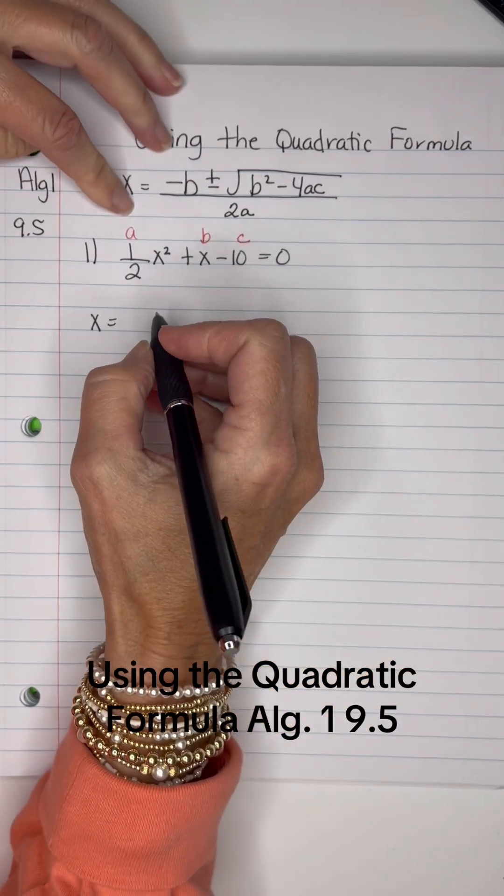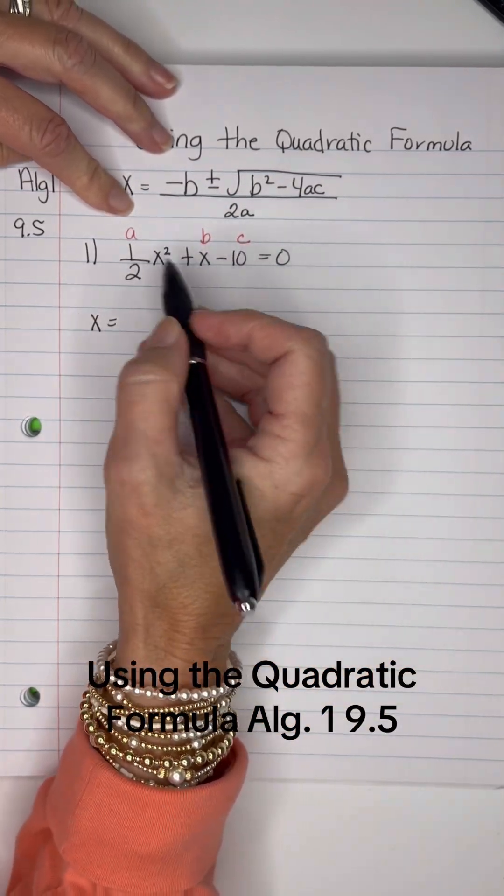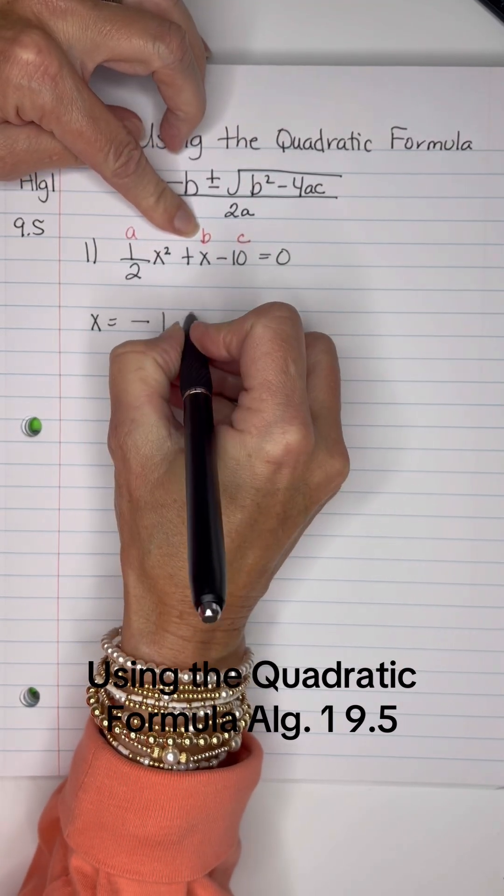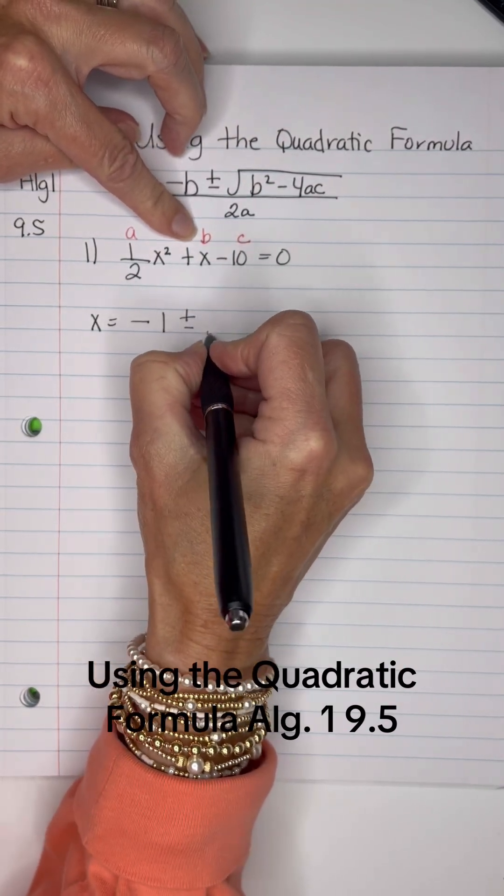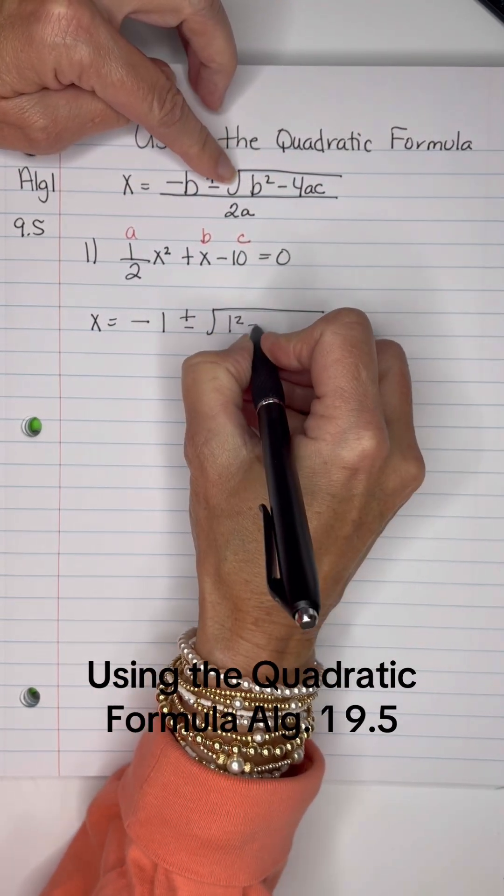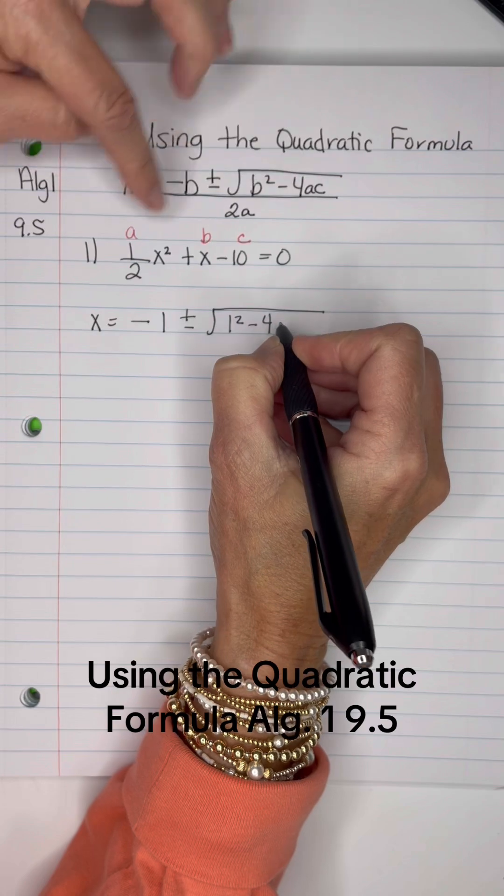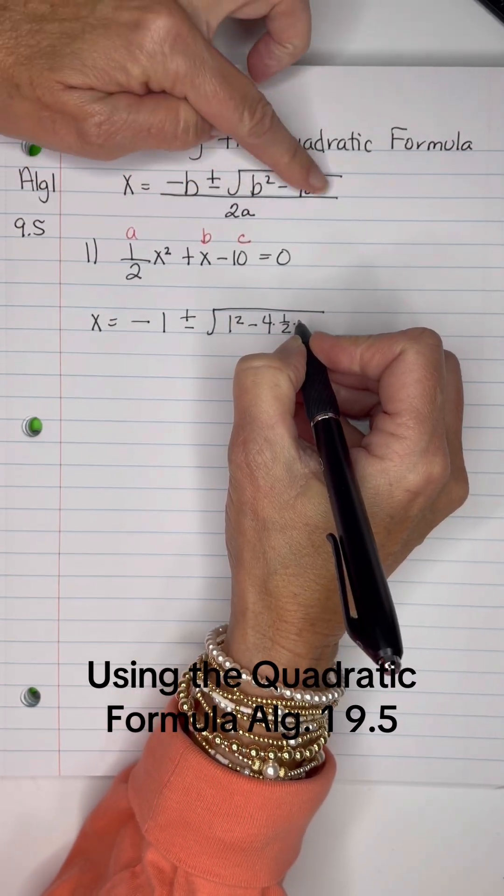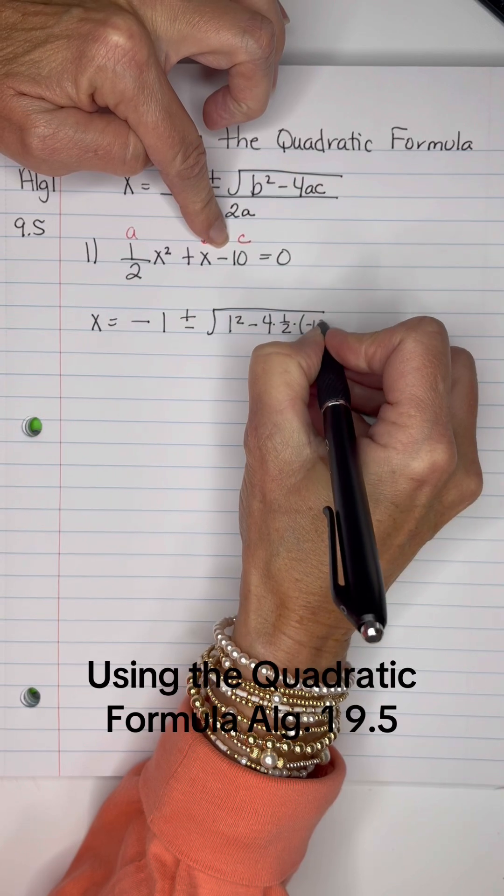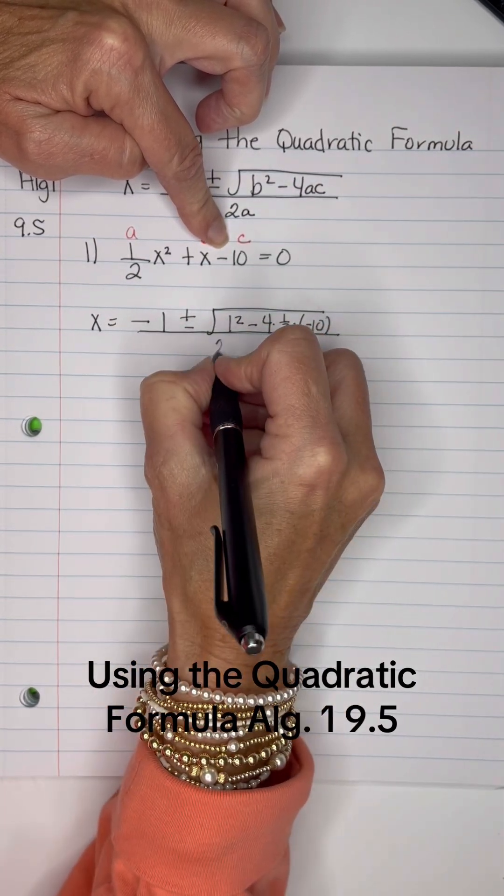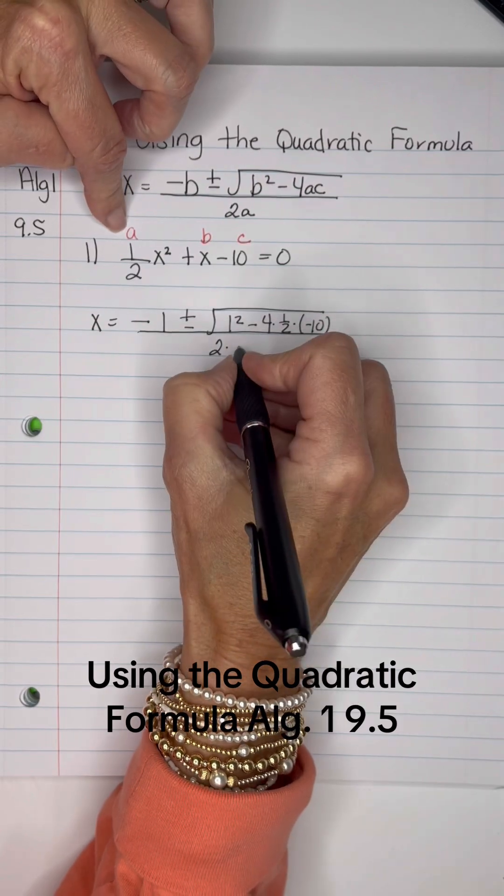So I've identified the a, b and c because this is in standard form and I'm going to have negative 1 for the b plus or minus square root 1 squared minus 4 times 1 half times c all over 2 times a, which is 1 half.